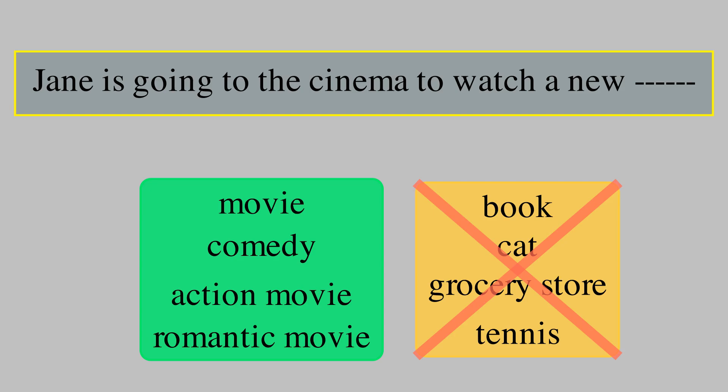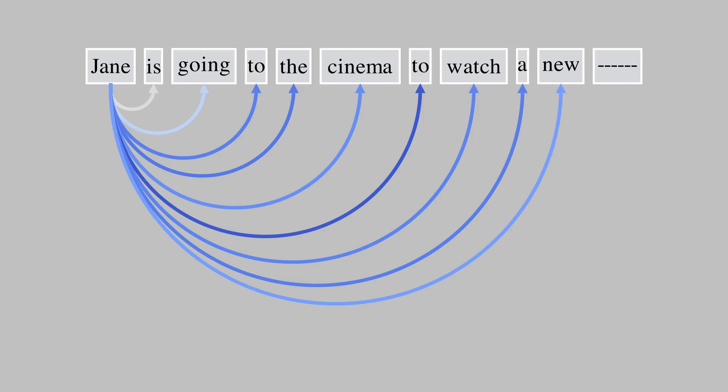This prediction is all based on the context or the information provided in the sequence of words. At a high level, this is how a language model is trained and how it works. Given the context of previous words, a language model has to predict the next word. In order to do this, the language model has to understand the relationship between the words in the sequence, and then based on that relationship it can learn which words to focus on for predicting that blank space.